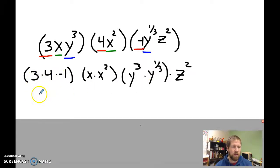So this is going to be 12, negative 12, x to the third, y to the, and be careful here, a lot of people would look at this and they would say, oh, well, 3 times one-third. But remember, it's not multiplying.